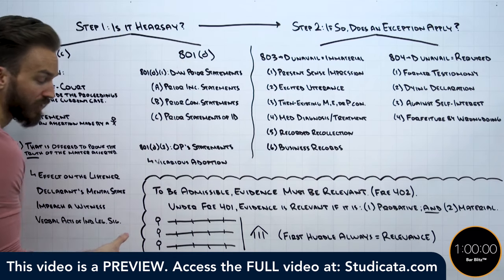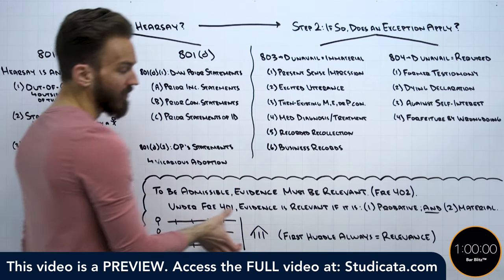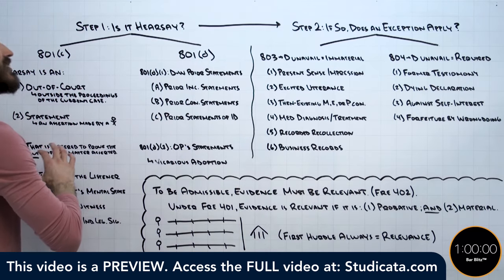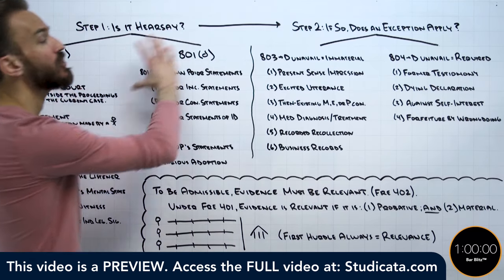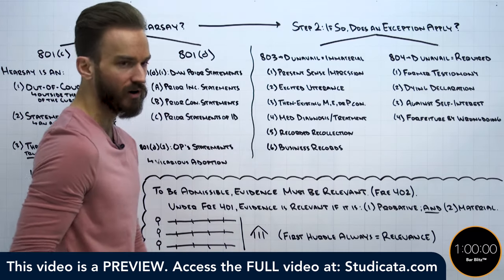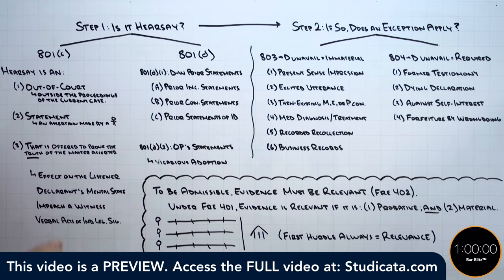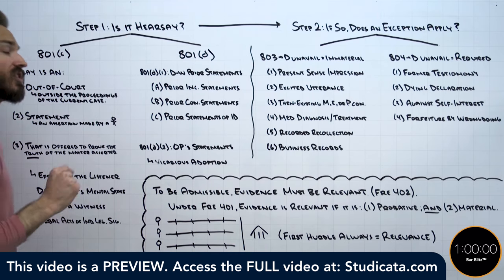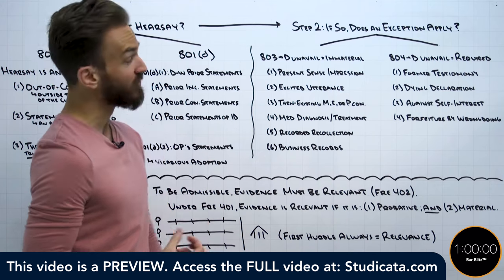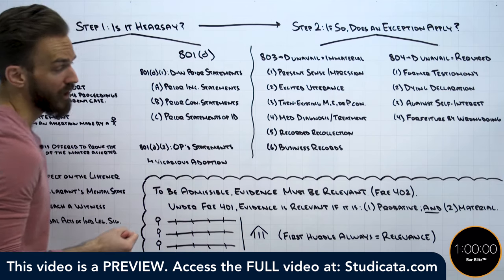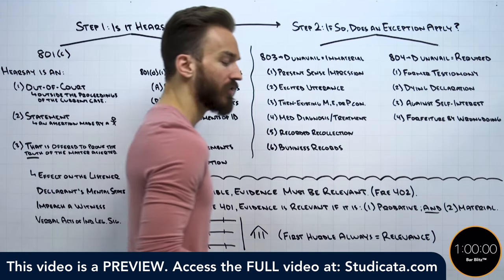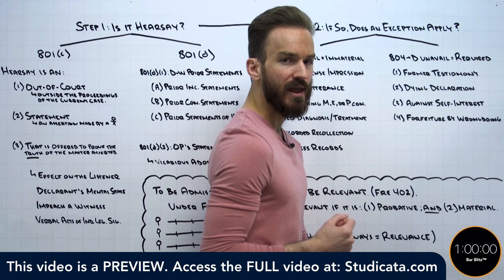Article 4 is really dealing with relevance and its limits, and Article 8 is dealing with hearsay. Typically, these are the areas on the bar exam where we're going to have the most opportunities to collect points in evidence. So these are the areas I'm really going to try to break down as best as I possibly can over the next 60 minutes or so.